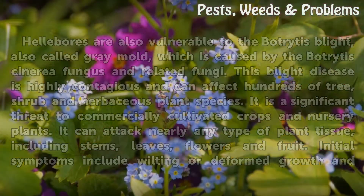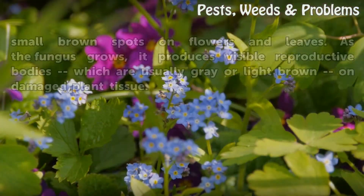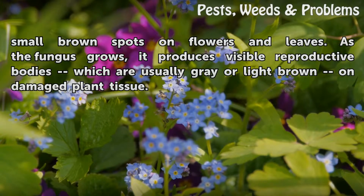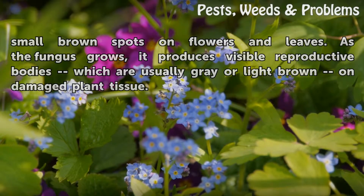Initial symptoms include wilting or deformed growth and small brown spots on flowers and leaves. As the fungus grows, it produces visible reproductive bodies which are usually gray or light brown on damaged plant tissue.